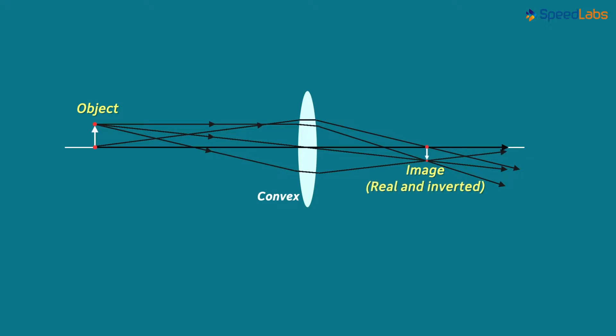This is a real and inverted image. This is the image formed for an object when a convex lens is used.